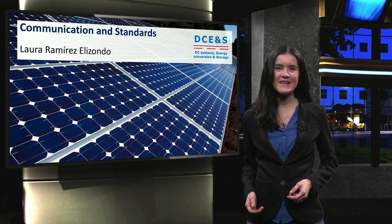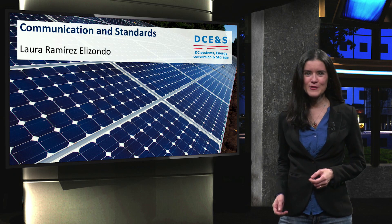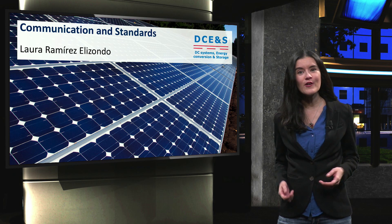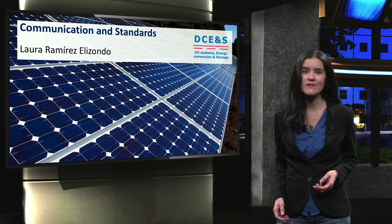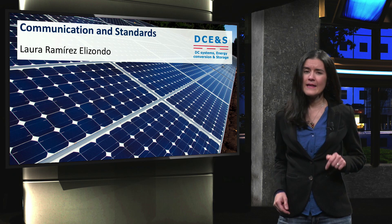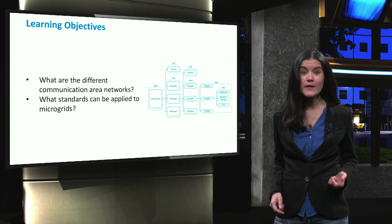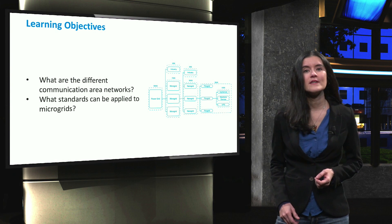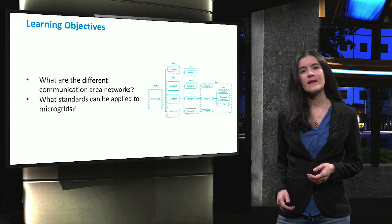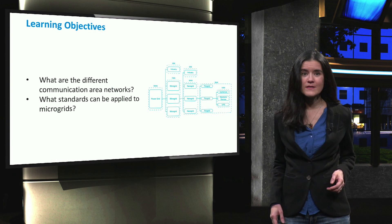Welcome to the fifth week of this course. This series of videos will cover communication, internal microgrid control, and the ancillary services that can be provided to the upstream network. In this video, we will discuss the different communication area networks. Additionally, we will have a quick look at the applicable communication standards that can be used in microgrids.